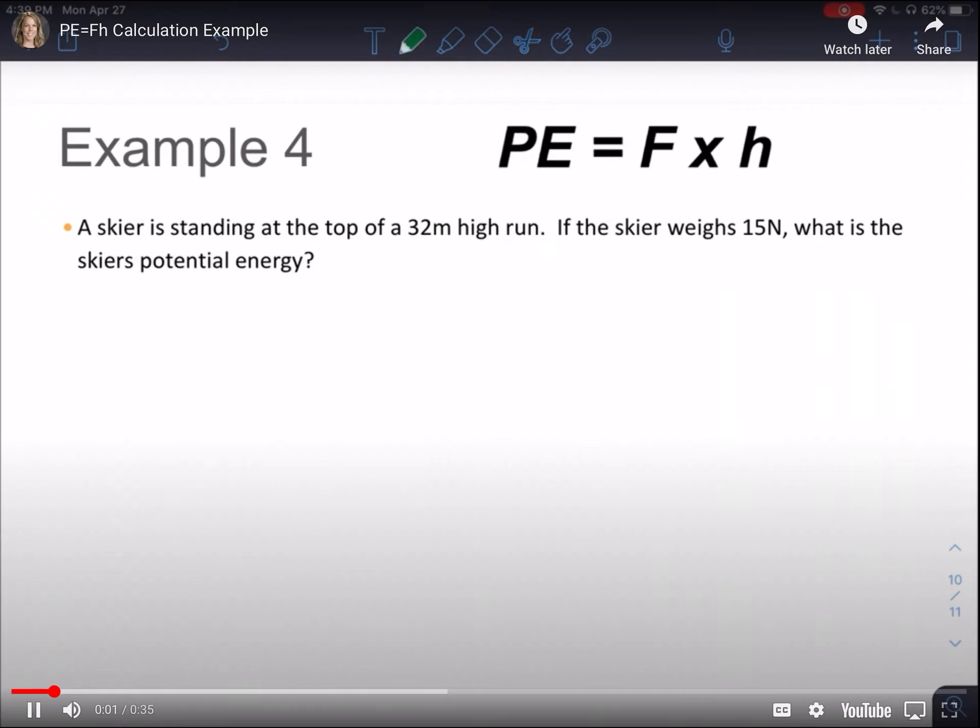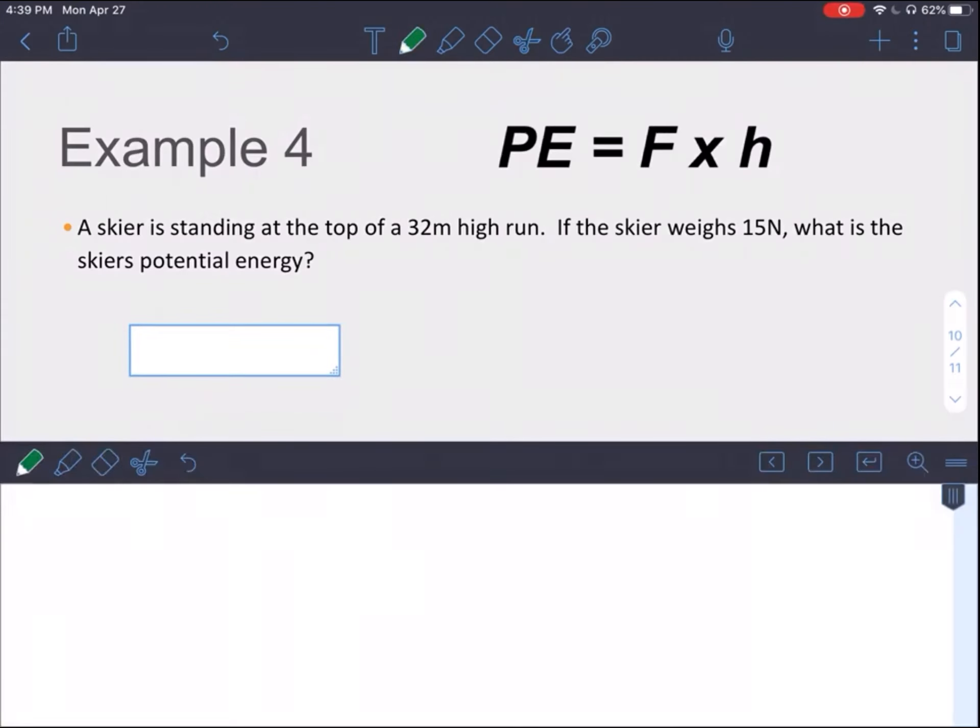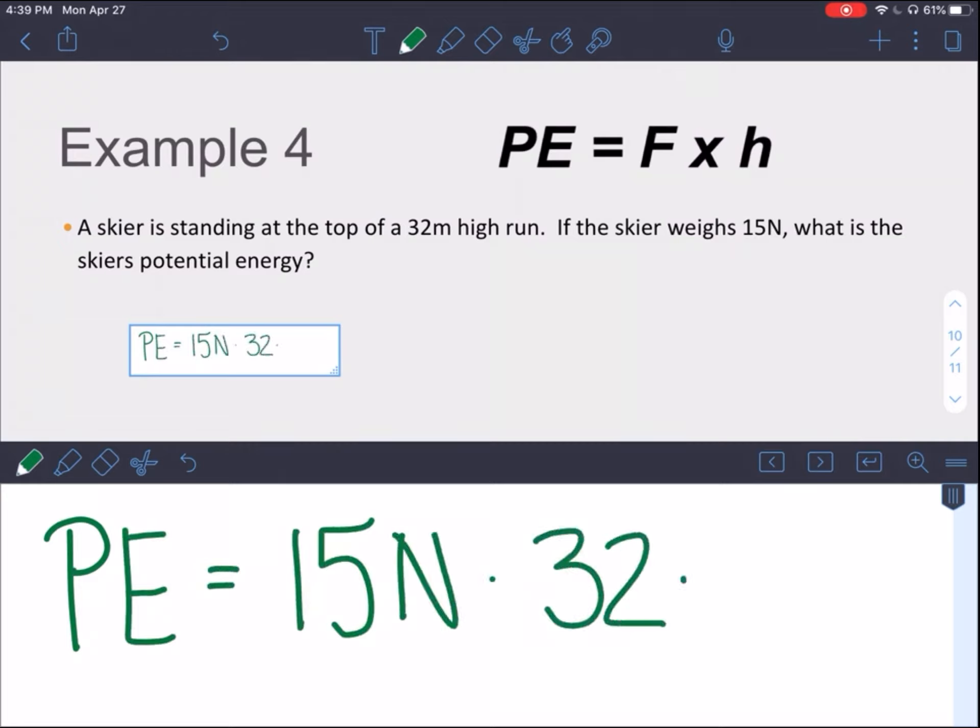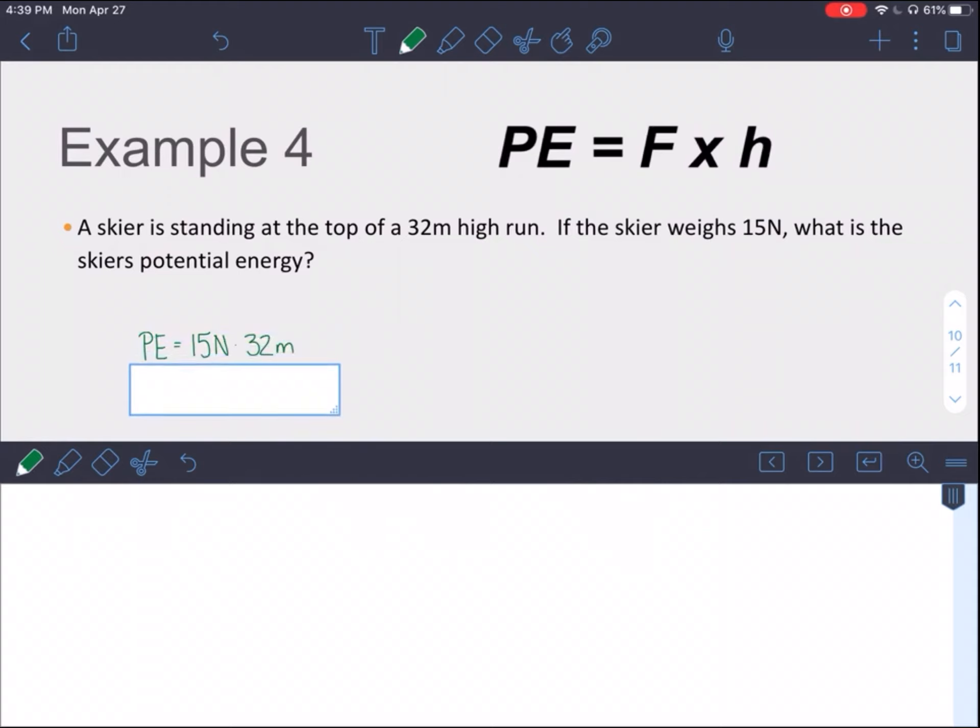The next way of calculating potential energy is with force times height. So you can almost think of this as the problem did one step for you by already multiplying the gravity or acceleration times mass. So all you have to do is take the force, 15 newtons, and multiply it by 32 meters. And what you get is a potential energy of 480 joules.